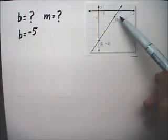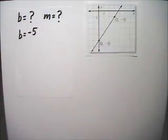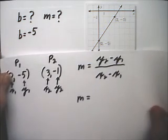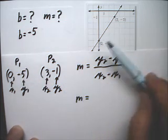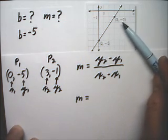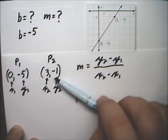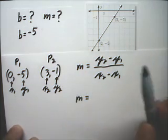And I have to figure out what the slope is of this line. Well, we've calculated slope many times. We've got these two points, 0, negative 5, and I made that P1. And 3, negative 1, I've made that P2.